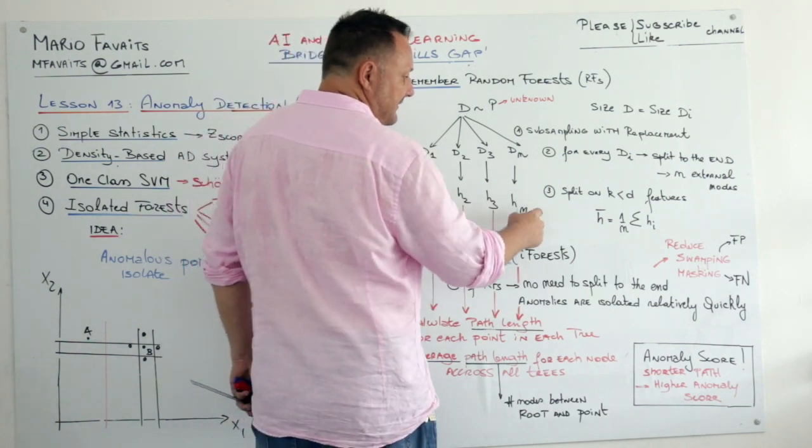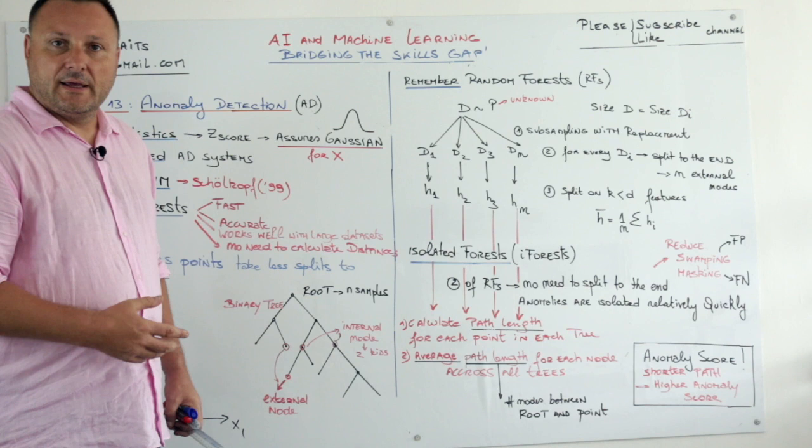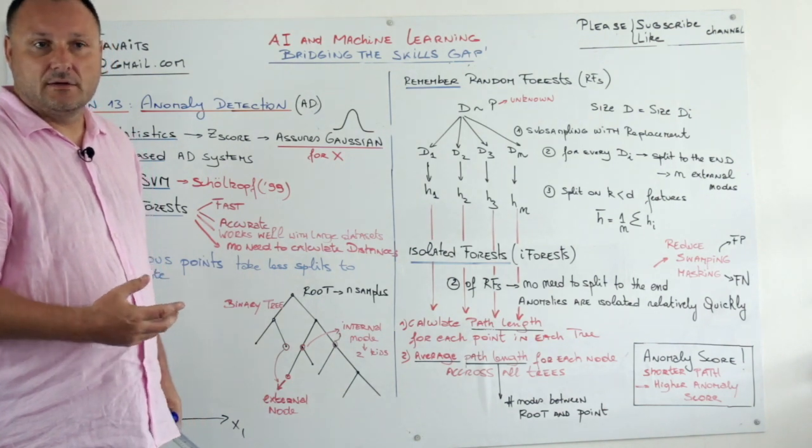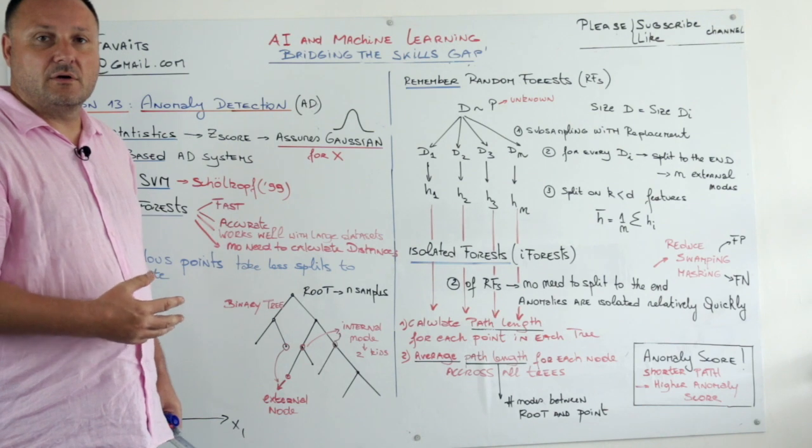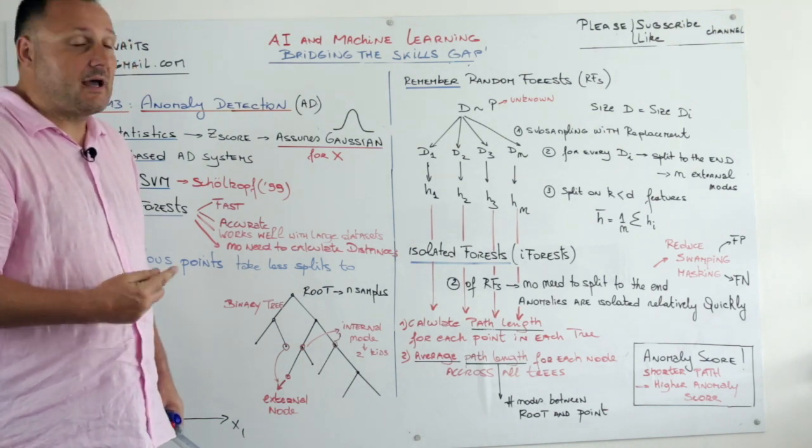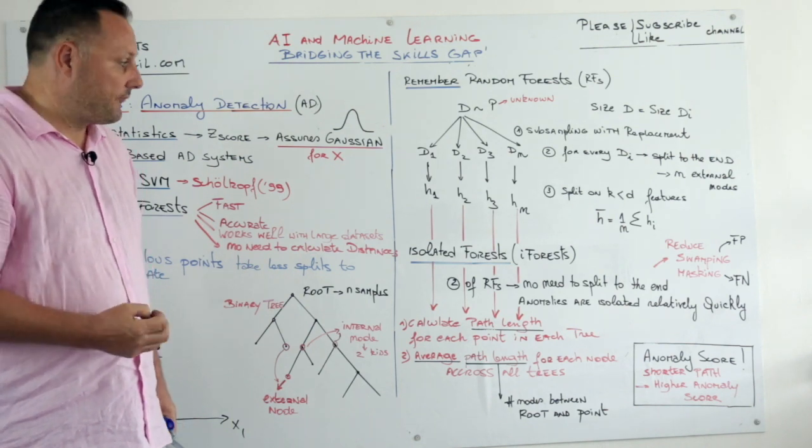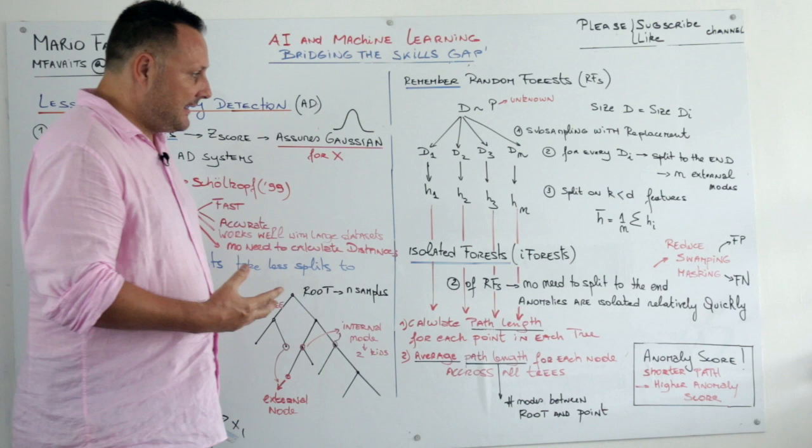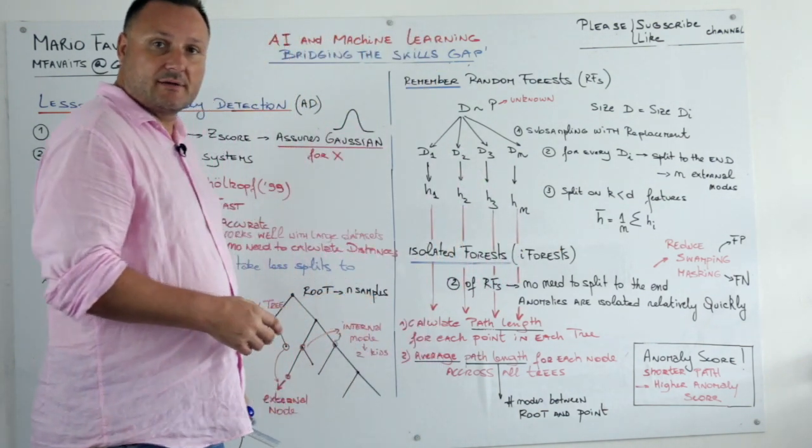Another feature is that you only split on K features. And K is smaller than D. If you have D features, you only split on a subset of D. And every time you split, it could be a different K. And then at the end, your classifier is just the average of all your classifiers.